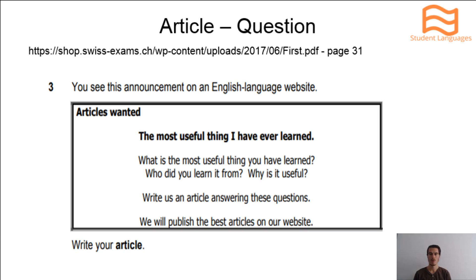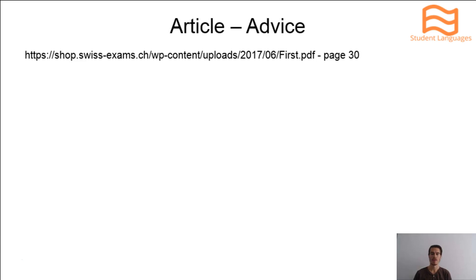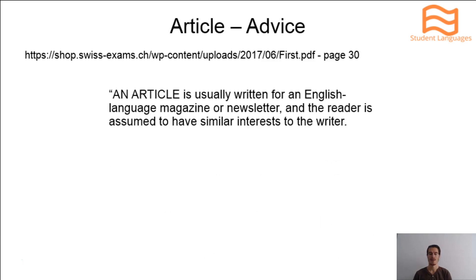This is an example question. When you're faced with an article in the exam, there is some good advice given in this Cambridge English First Handbook for Teachers. An article is usually written for an English language magazine or newsletter. The reader is assumed to have similar interests to the writer. So we know who the target audience is, which is very important for the marking criteria. Target audience: English language magazine or newsletter. This will determine the type of language that you need to use.